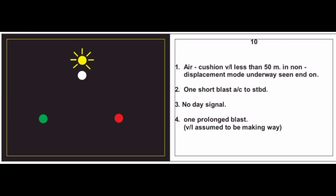Card 10: A yellow all-round flashing light — this is an air cushion vessel less than 50 meters in non-displacement mode, underway, seen end-on. Action: one short blast, alter course to starboard. No day signal. Sound signal: one prolonged blast, as vessel is assumed to be making way.